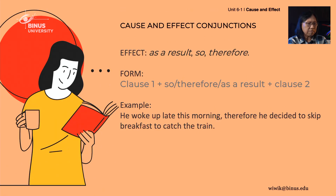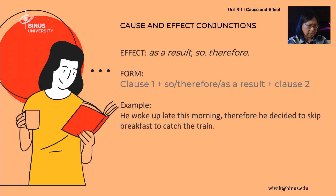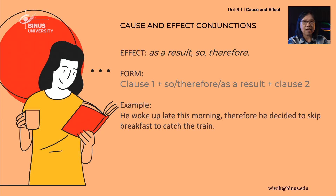How about if we focus on the effect? The conjunctions we use are: as a result, so, and therefore. The form is clause one, plus so, therefore, or as a result, plus clause two. For example: He woke up late this morning. Therefore, he decided to skip breakfast to catch the train.